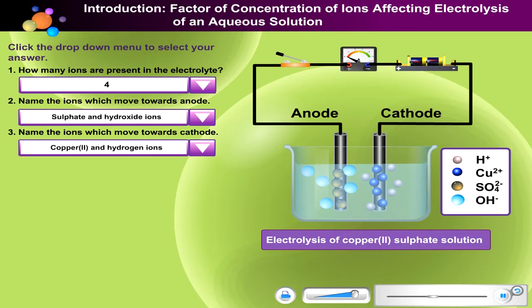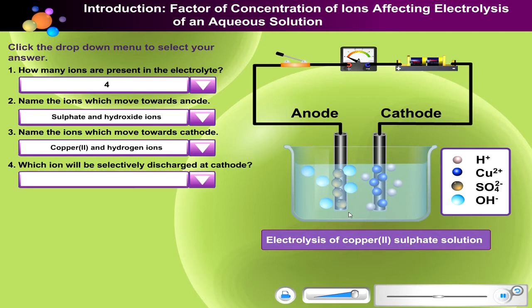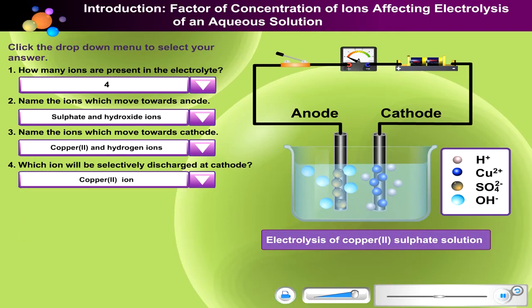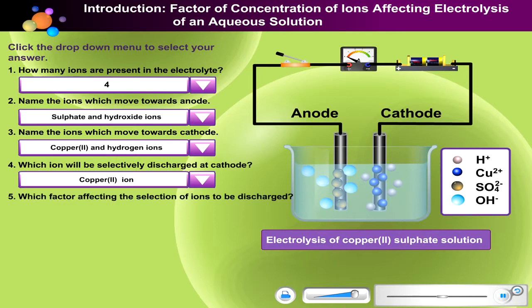Question number 4: Which ion will be selectively discharged at the cathode? Question number 5: Which factor affects the selection of ions to be discharged?